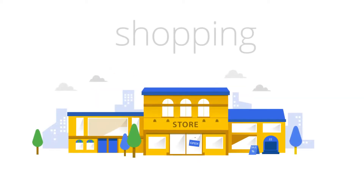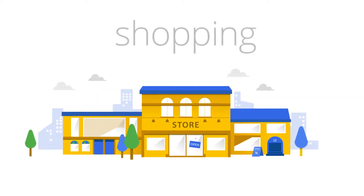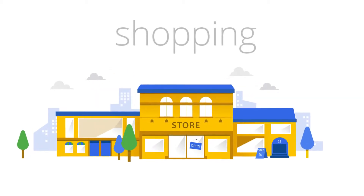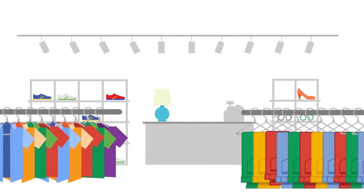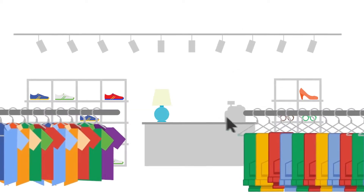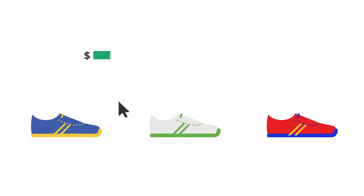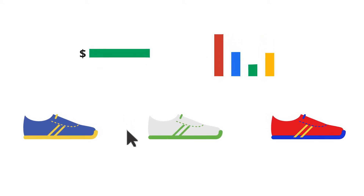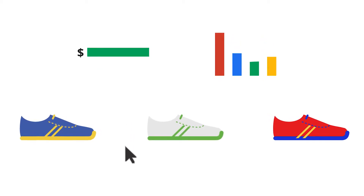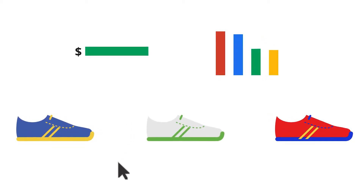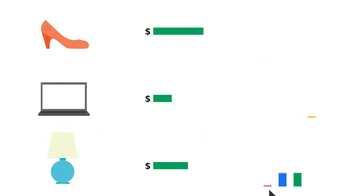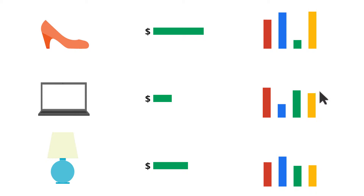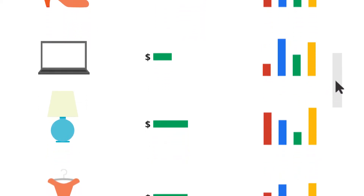Promoting your store inventory with product listing ads is easy with the shopping campaign. Shopping campaigns are a new way to manage your products in AdWords, streamlining how you organize, bid, and report on your products by enabling you to engage with your Merchant Center product data like never before.